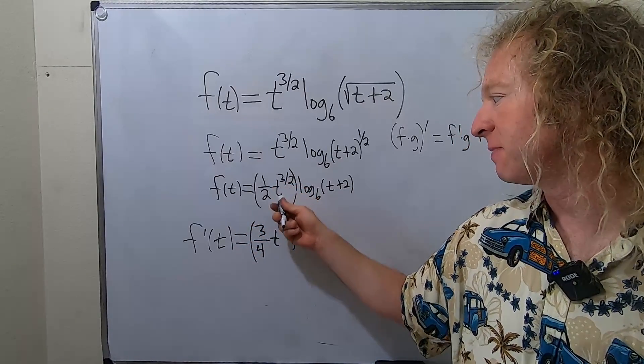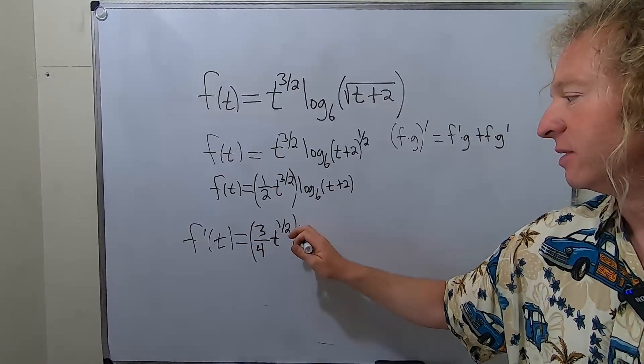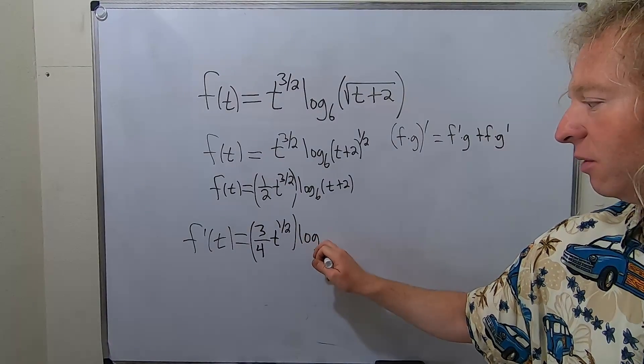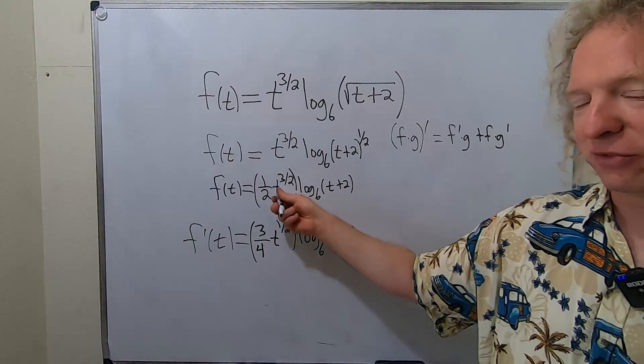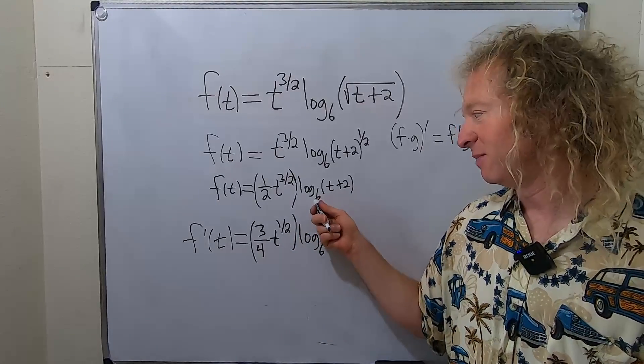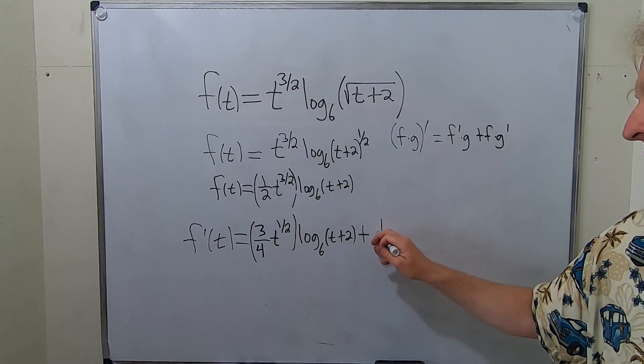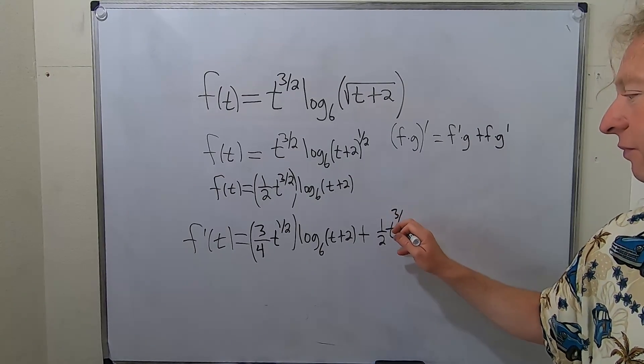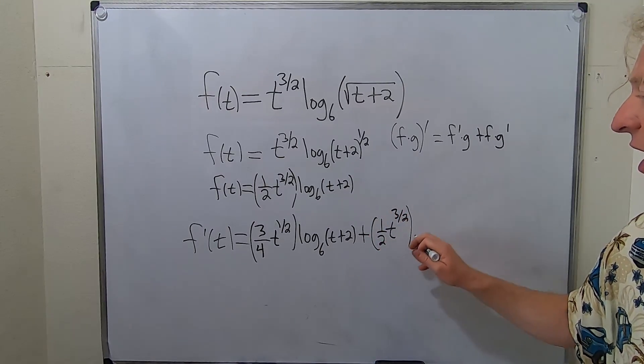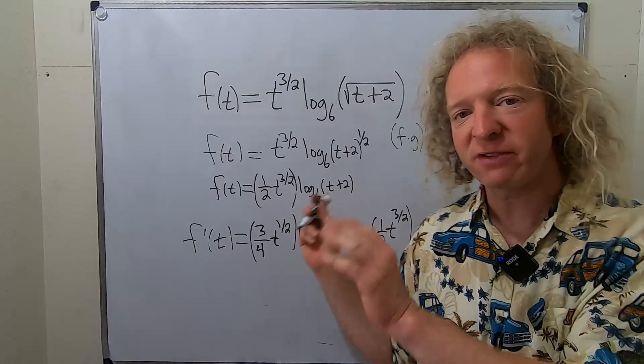So this is the derivative of the first. We subtracted 1. 3 halves minus 2 halves is 1 half times the second. Going really slow. I haven't done this problem in a long time. So derivative of the first and it looks really messy times the second plus the first. So just the 1 half t to the 3 halves.